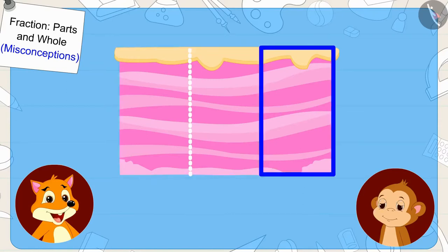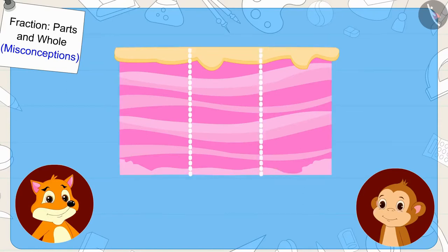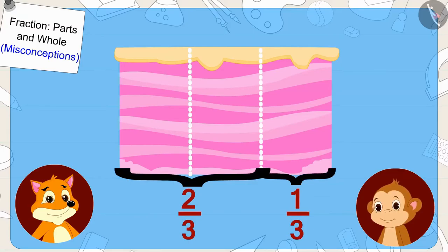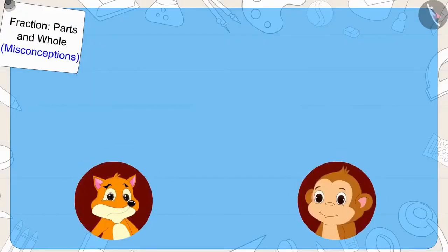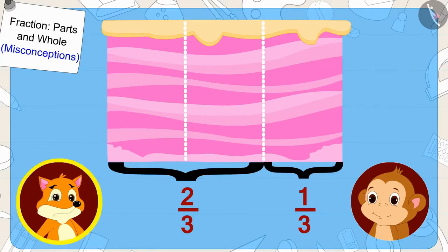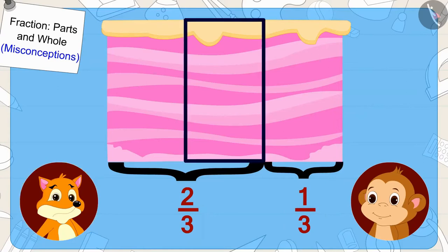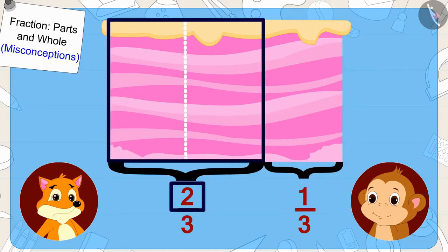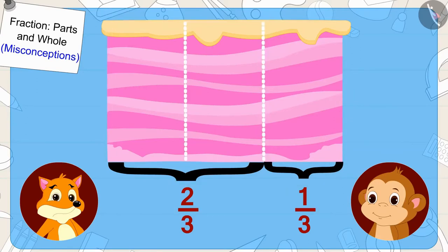When Babban could not understand, the fox wrote it in the form of a fraction. Children, the fox has divided the cake into three equal parts. But are they both getting equal amounts of cake? The fox was once again fooling Babban. The fox has got two parts while Babban has got only one part. Hence, the fox has got more cake than Babban.